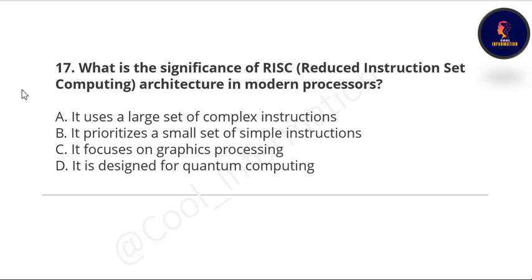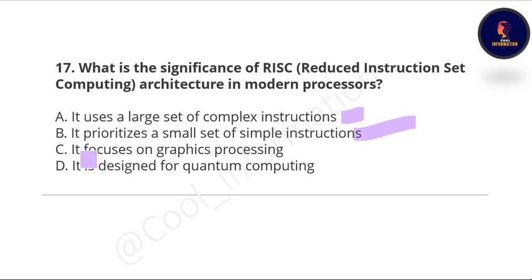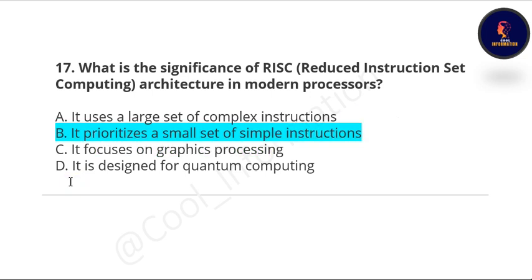Next question: what is the significance of RISC architecture in modern processors? Options are: it uses a large set of complex instructions, it prioritizes a small set of simple instructions, it focuses on graphics processing, and it is designed for quantum computing. The correct option is B — it prioritizes a small set of simple instructions.